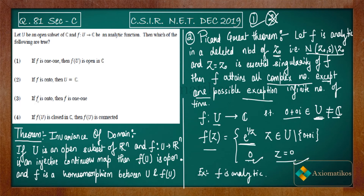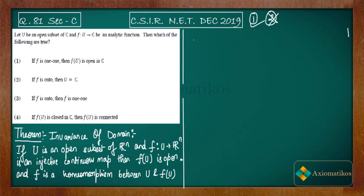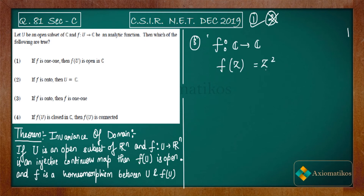Now let us look at option three: if f is onto, then f is one-to-one. I initially considered a constant function but corrected myself — a constant function is not onto. Instead, take f: ℂ → ℂ defined by f(z) = z².